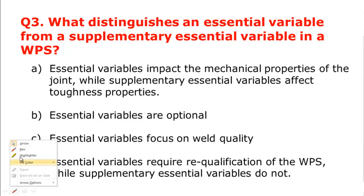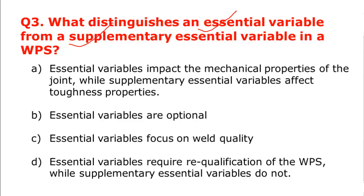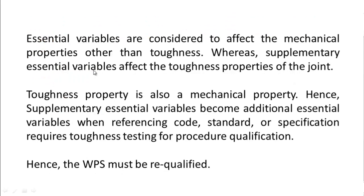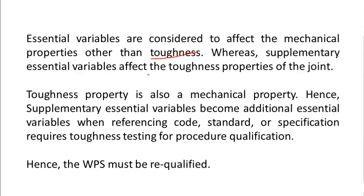Question number three: what distinguishes an essential variable from a supplementary essential variable in a WPS? Essential variables affect mechanical properties other than toughness, while supplementary essential variables affect toughness properties. Note that toughness is also a mechanical property. Whenever supplementary essential variables are mandatory per the construction code, they act as additional essential variables.